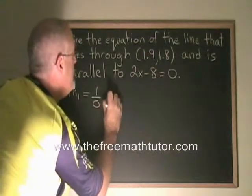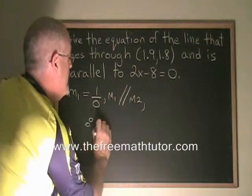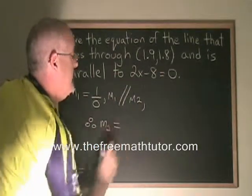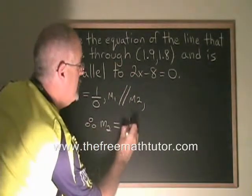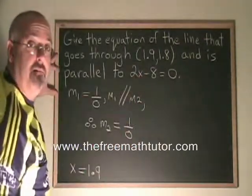Since m1 is parallel to m2, m2 must also, therefore, have a slope 1 over 0. And I can use this fraction and this point to derive my equation.